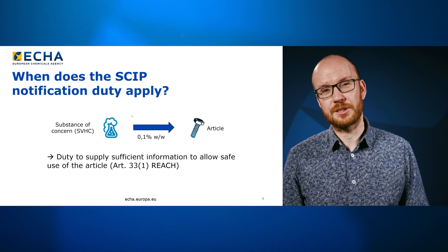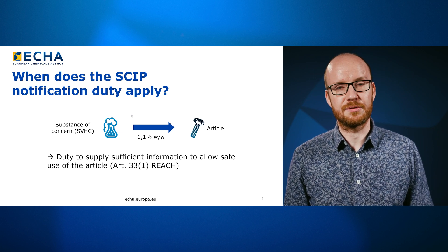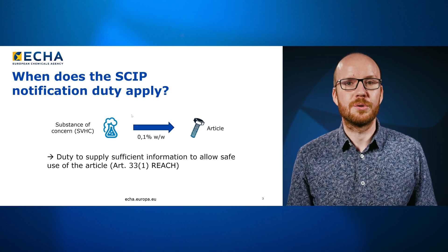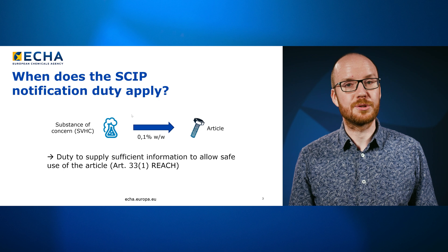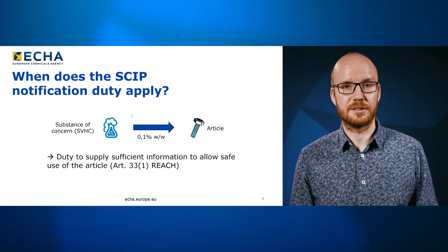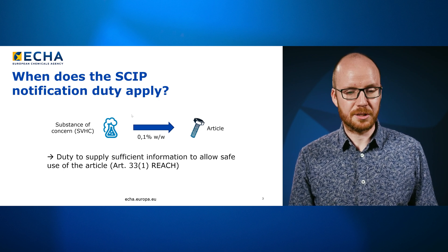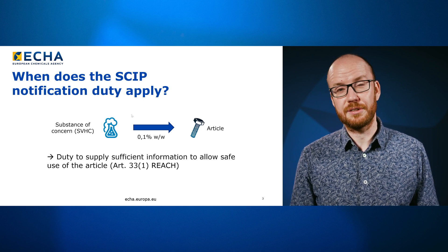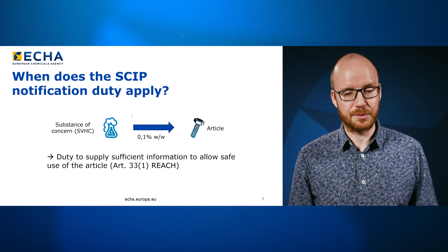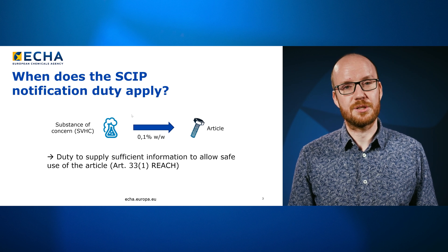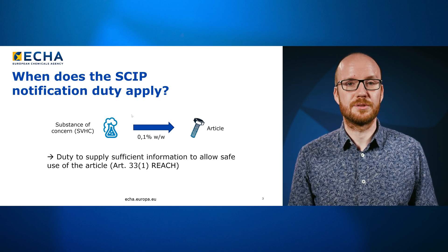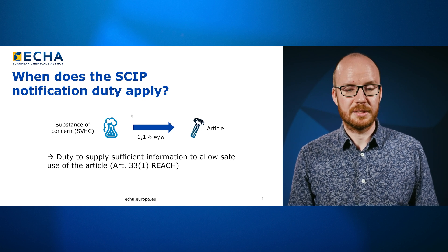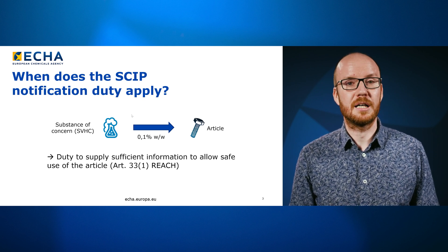When does a SCIP notification duty apply if you're a company producing, selling or importing products containing a substance of very high concern? The threshold is the following: whenever there is a substance of very high concern, as defined under REACH, in a concentration of 0.1 percent weight by weight contained in an article, then there is a duty to supply the information needed to allow its safe use.